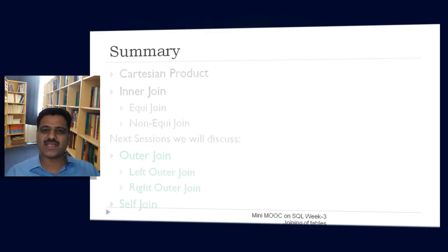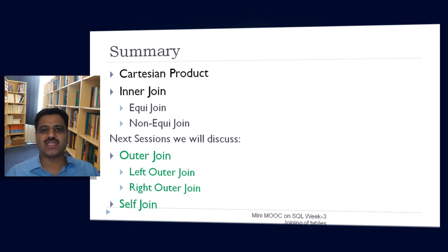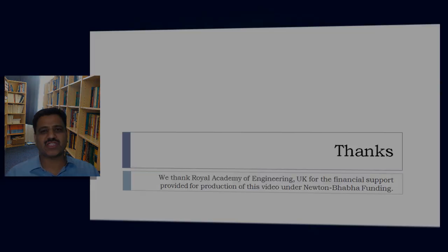Let us summarize the concepts learned in this session. We covered the concept of Cartesian product and inner join, and discussed two types of inner join: equi inner join and non-equi inner join. In the next session, we will discuss outer join and its two types — left outer join and right outer join — as well as self join. Thanks for watching this video.